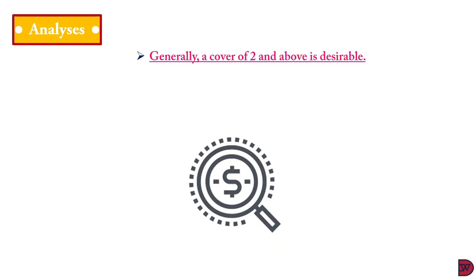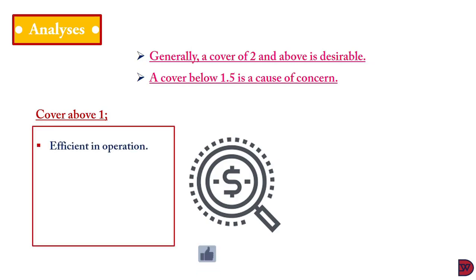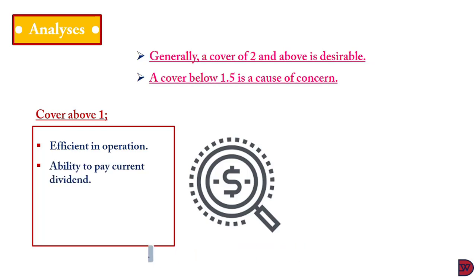As a general rule, a cover of two and above is what every business should be targeting. A cover of 1.5 and below is a great concern. Any ratio above one is considered okay, but hovering around average metrics is not good enough — it should be above a certain level for investors to have confidence. A cover above 1.5 or above two means the business was able to generate enough profit to cover the dividend.